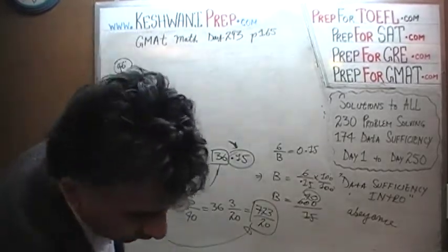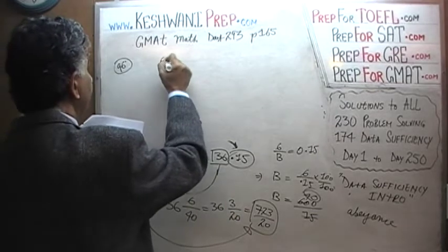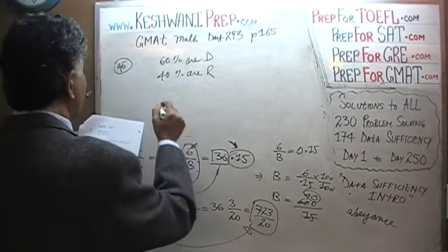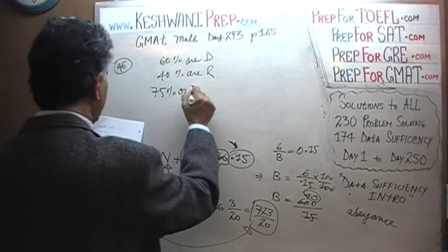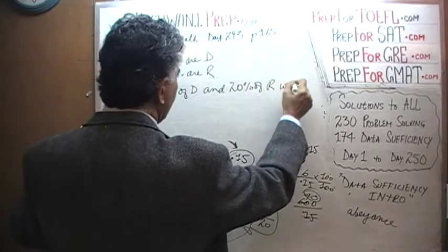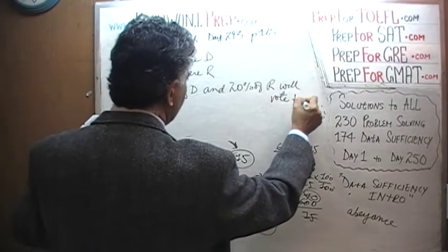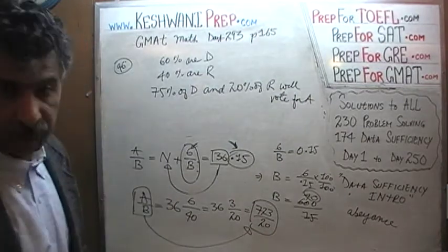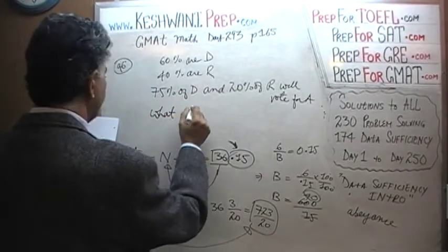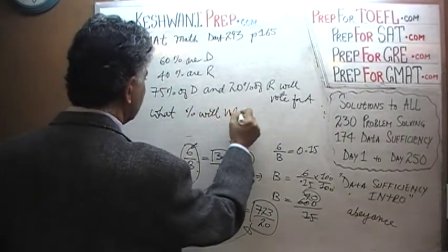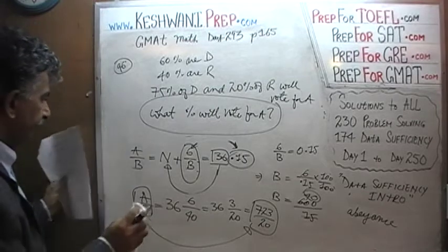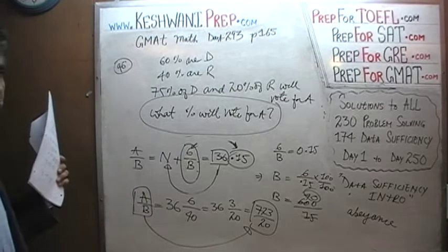Number 96. In number 96, we are told that 60% are Democrat. We are told that 40% are Republican. And we are further told that 75% of Democrats and 20% of Republicans will vote for candidate A. The question is, what percentage of the total population will vote for A? What percent will vote for A? Let's find out.